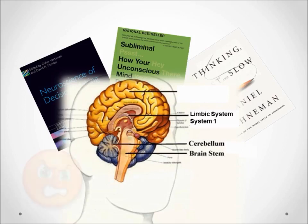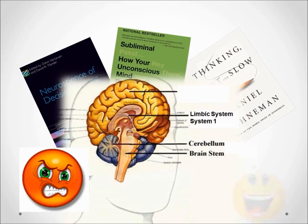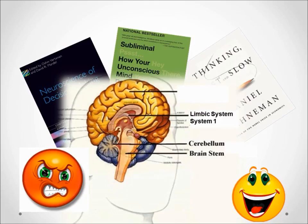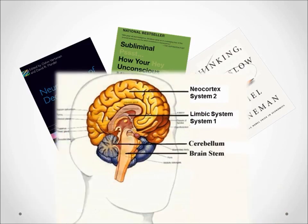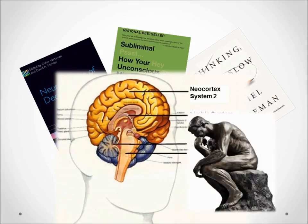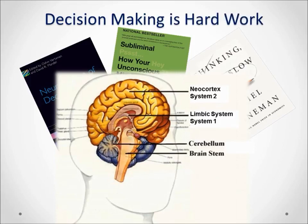For example, we react to faces we perceive as angry faster than to happy faces because they contain a greater possibility of danger — again, fight-or-flight. System Two is logical. It resides in the neocortex, where human language, abstract thought, imagination, and consciousness take place. This is also where deep thought and analysis operate. System Two allocates attention to effortful mental activities, including complex computation. In other words, good decision-making is hard work.